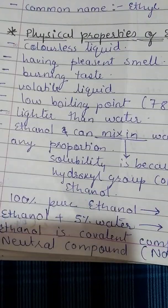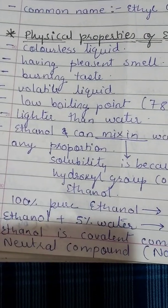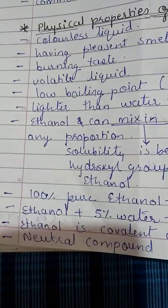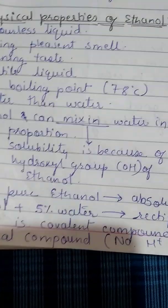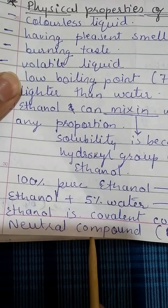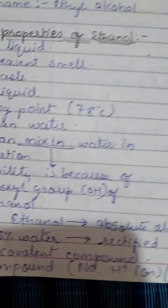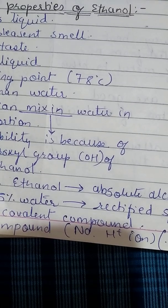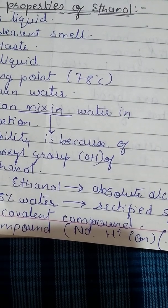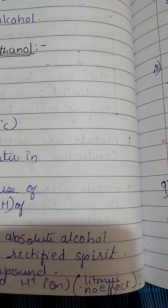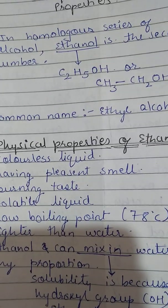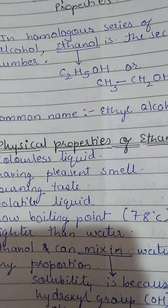The solubility of ethanol in water is due to its hydroxyl group. 100% pure ethanol is called absolute alcohol. Ethanol plus 5% water is called rectified spirit. Ethanol is a covalent compound and a neutral compound, because it does not have any H+ ions and it does not have any effect on litmus paper.